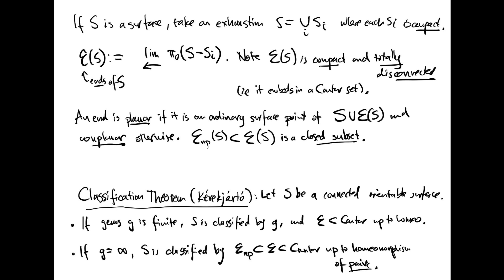If the genus is infinite, we have two kinds of ends. We have the planar ends and the non-planar ends. So we get a compact space E of ends, and we get a compact subspace, E_NP, of non-planar ends. And both of them embed in the Cantor set. Then the surface S in the infinite genus case is classified by the homeomorphism type of the pair of spaces, E_NP contained in E. In other words, if you have two surfaces, S and S', both of infinite genus, and you have some kind of abstract homeomorphism from E of S to E of S', which takes the non-planar ends of S to the non-planar ends of S', then the surfaces are homeomorphic.